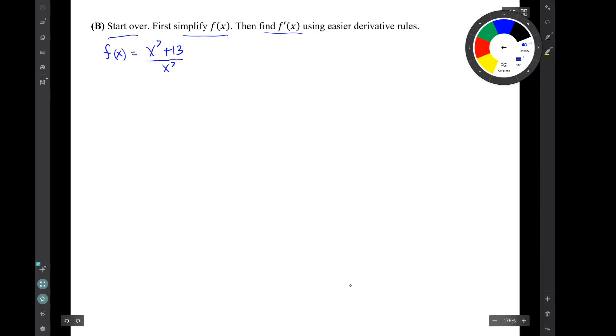Well, let's simplify this by breaking it into two fractions with the same denominator. Okay. Well, now we can simplify this even further. x^7 over x^7 is just the number 1.